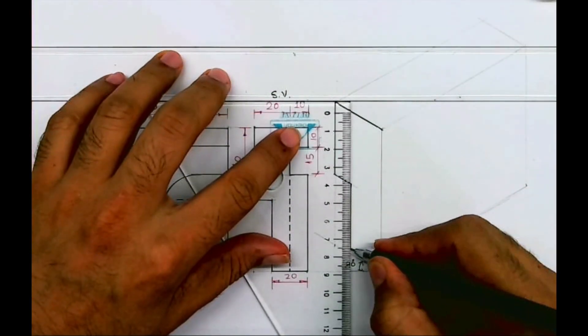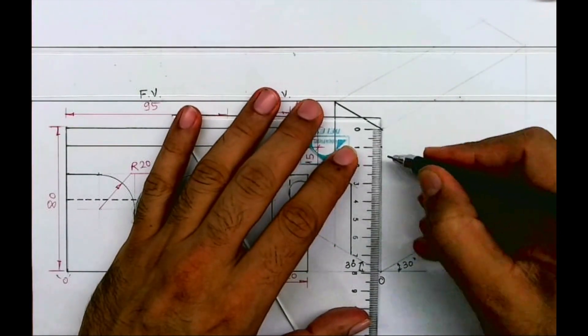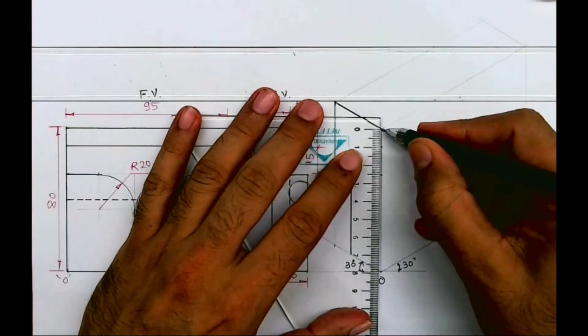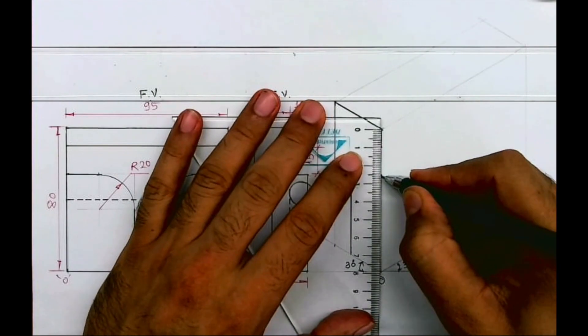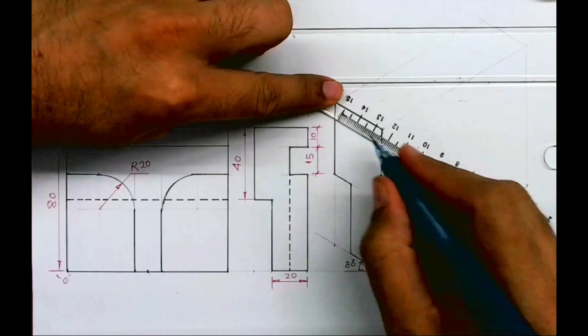Then you draw a straight line. Then again here you take 10, then gap of 15, then straight line. So we are done with this part.